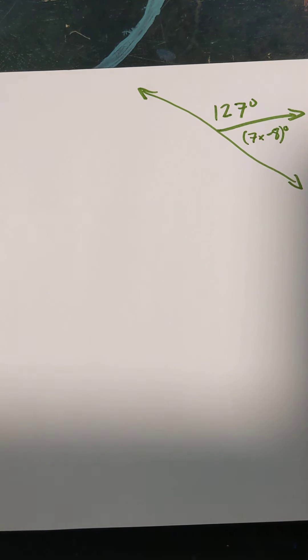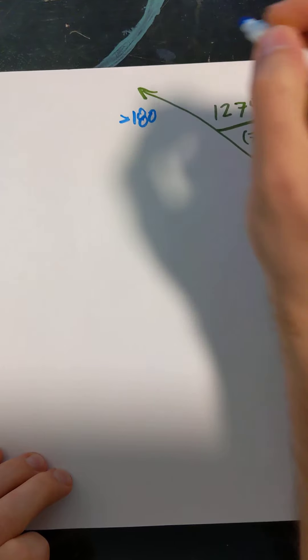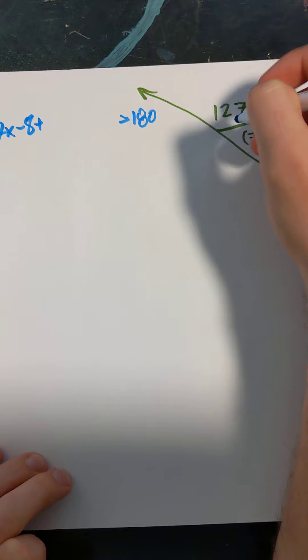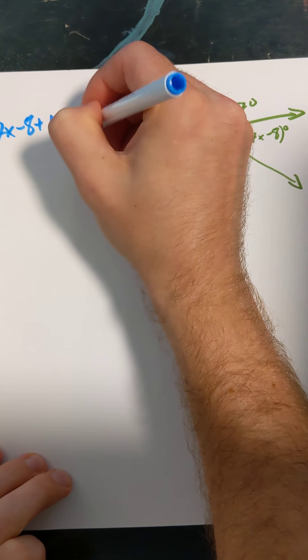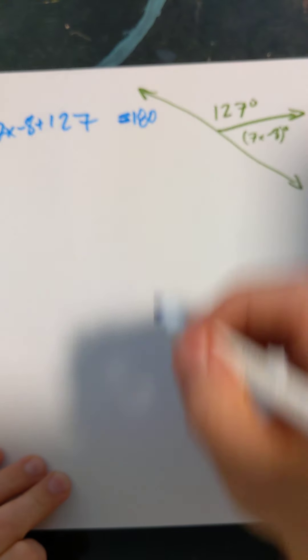And this is 7X minus 8 degrees. Okay. Well, what does the straight line add up to again? It adds up to 180 degrees. So we'll take our 7X minus 8, add to that 127, because those are our two angles, and set it equal to 180 degrees.